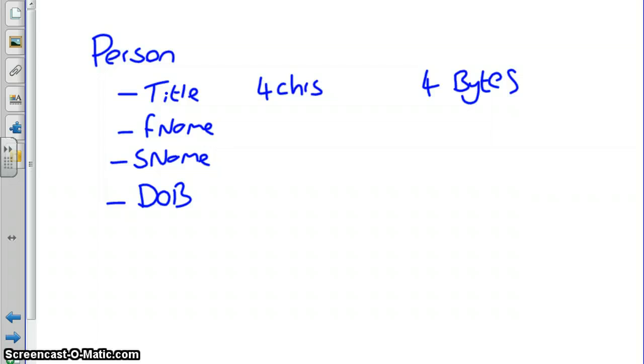First name, like we said earlier, this could be up to 20 characters. And so then in turn this could be 20 bytes. Surname, we could go for similar and say this could be 20 characters. And so, because this is a string again, this could be 20 bytes.